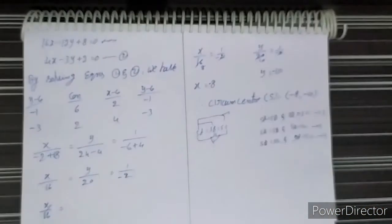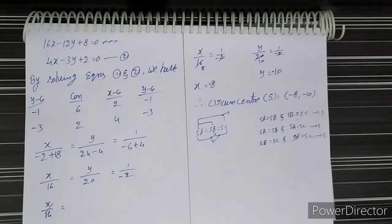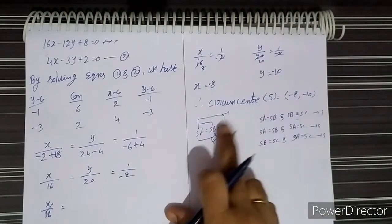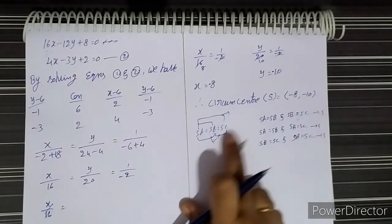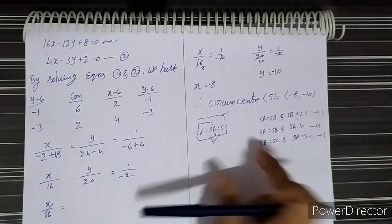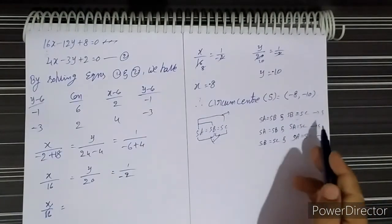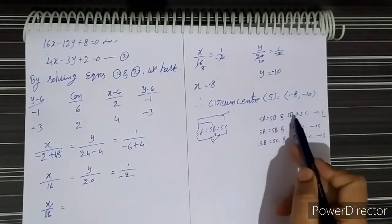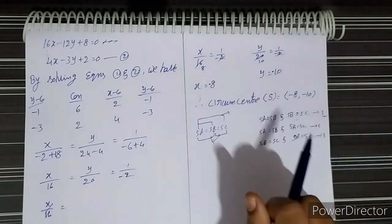We can equate any two values. For finding the circumcenter, we only need two equations.